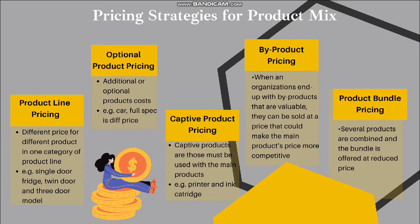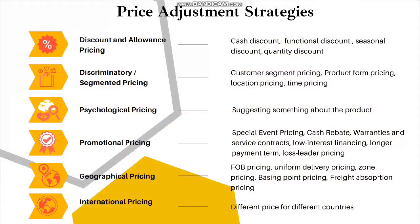The third is captive product pricing. Captive products are those that must be used with the main product, for example, a printer and ink cartridge. The fourth is by-product pricing, which refers to products with little or no value produced as a result of the main product. Producers seek little or no profit beyond covering storage and delivery costs — for example, a chicken processor sells feathers to mattress and pillow makers. The fifth is product bundle pricing, where several products are combined and offered at a reduced price — for example, a full blender set is cheaper than buying each item separately.